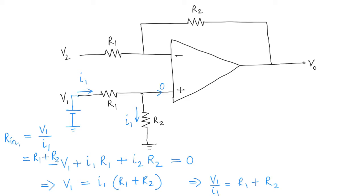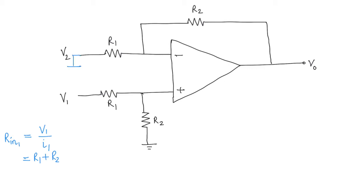Let me clean up this board a little bit. Next, we want to find the input resistance at the input V2. Let's explicitly denote this voltage source here of value V2, and what we want to find is I2.